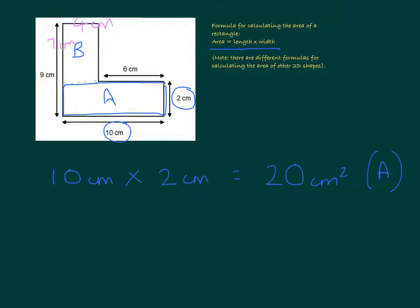So we can again use the formula area equals length times width to multiply 7 cm by 4 cm, the length and width of rectangle B, to give us 28 cm².